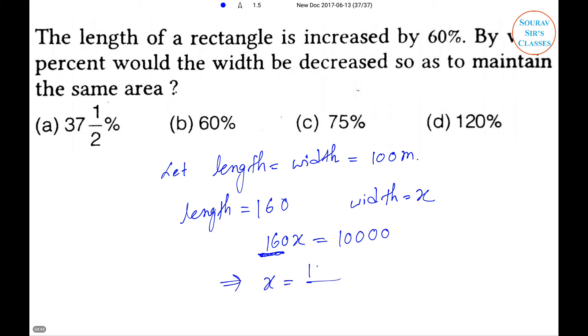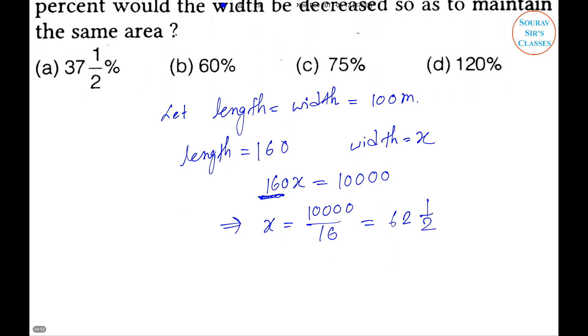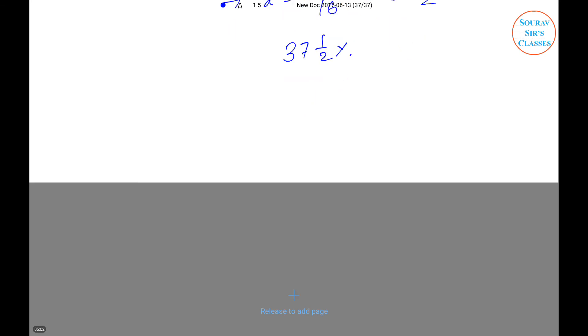So x = 10,000 / 160 = 62.5. Therefore the width is reduced by 37.5 percent. Option A is the right answer.